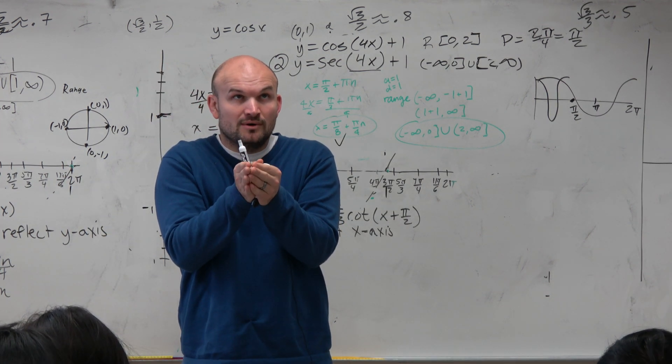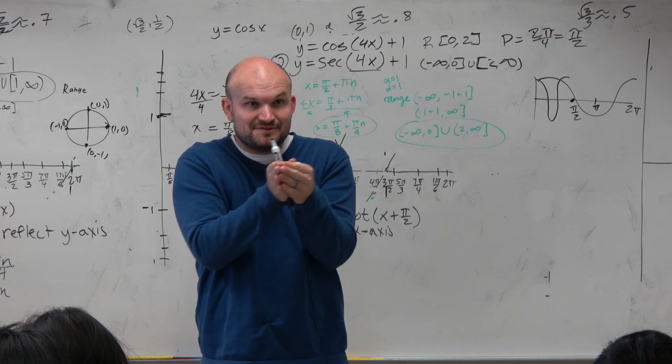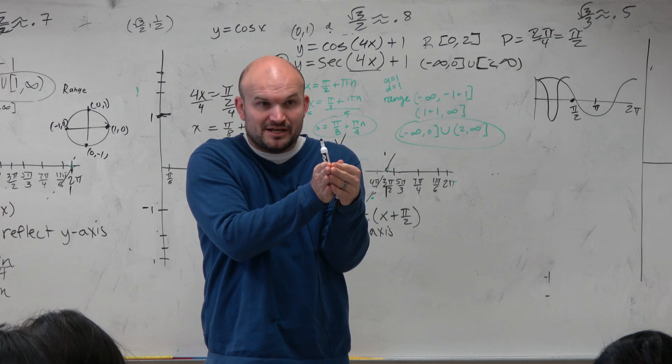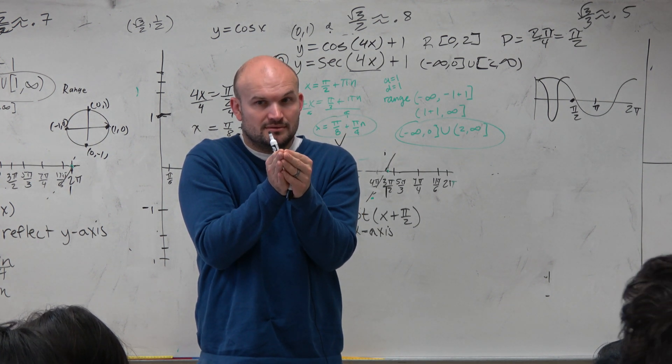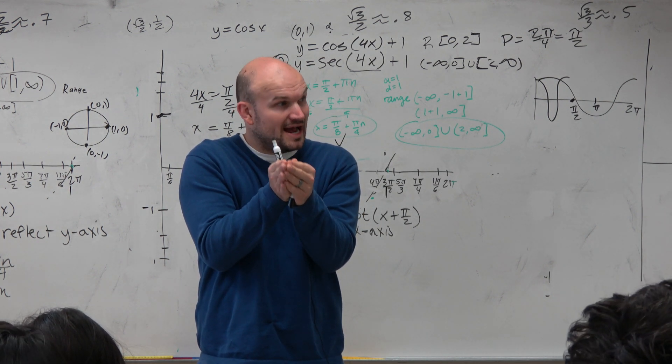So if we had 0, but it just got shifted pi halves to the left, then my new first asymptote is going to occur at negative pi halves, right?